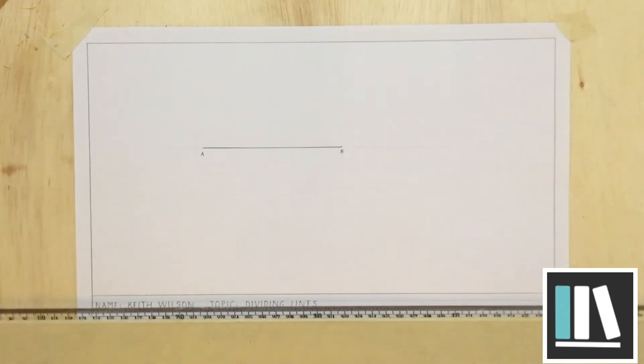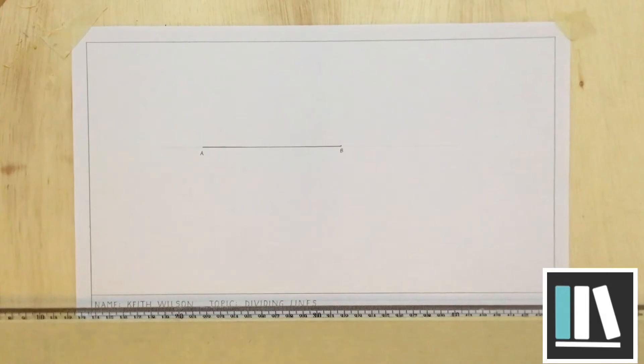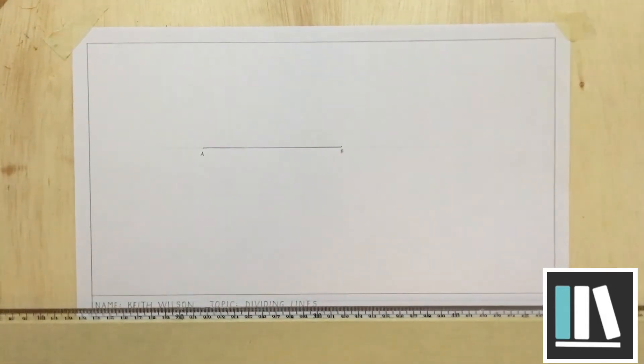We are going to now bisect this line in five equal parts. When naming lines in technical drawing, the lines are named based on their starting point and ending point. This line can now be called line AB. Okay, so let's divide the line.